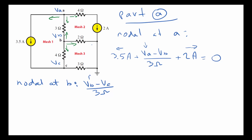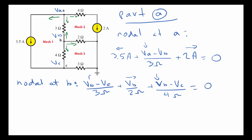The current going to the right goes through the 2 ohm resistor, and the other side connects to the reference node at 0 volts, so we write VB divided by 2 ohms — or in full, VB minus 0 divided by 2 ohms. Then the current going down through the 4 ohm resistor is plus VB minus VC divided by 4 ohms. VB always appears on the leftmost side of the term. That equals 0 because of KCL. That's the node voltage equation at node B.